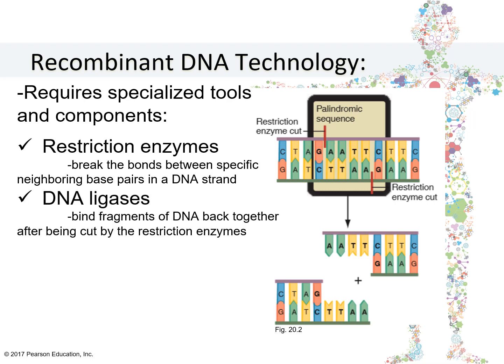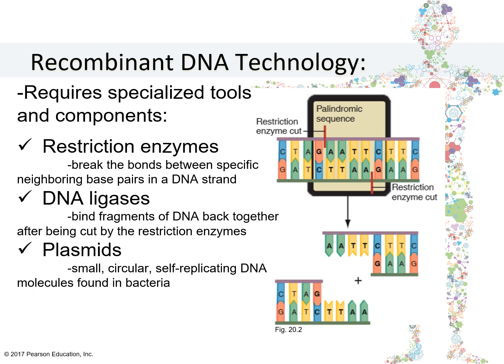After being cut by the restriction enzyme, DNA ligases will then bind the DNA fragments back together. Another component of recombinant DNA technology are plasmids. Plasmids are small, circular, self-replicating DNA molecules also found in bacteria. They are not part of the normal bacterial chromosome, but they contain genes important for bacterial replication. These plasmids can be extracted from the bacteria, combined with a foreign DNA, and re-inserted back into the bacteria. Once re-inserted, the recombined plasmids will be cloned every time the bacteria undergoes cell reproduction.